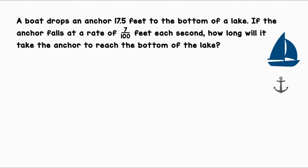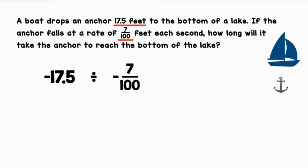A boat drops an anchor 17.5 feet to the bottom of a lake. If the anchor falls at a rate of 0.07 feet each second, how long will it take the anchor to reach the bottom of the lake? The total distance the anchor drops is 17.5 feet. We can represent this using a negative because it is dropping. It falls at a rate of 0.07 feet each second. We're going to divide by negative 0.07 feet because it is falling.